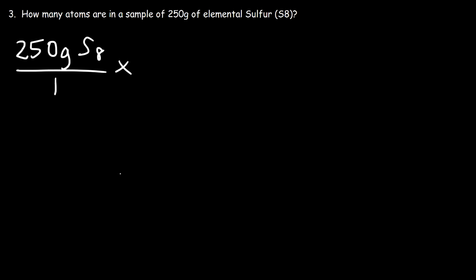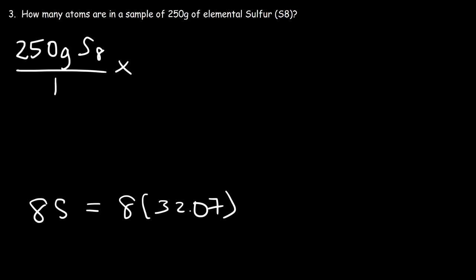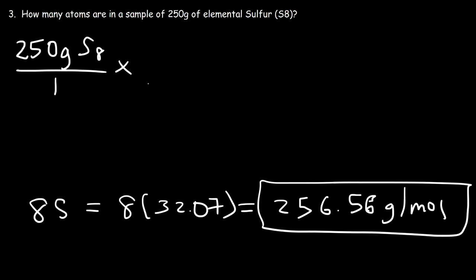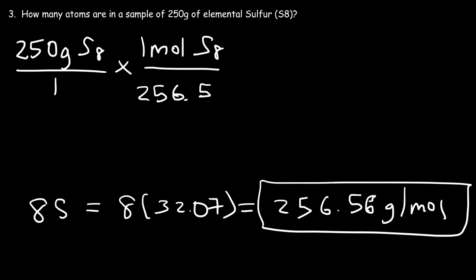We need to find the molar mass. This molecule has eight sulfur atoms, and each atom of sulfur has an atomic mass of 32.07. So eight times 32.07 is about 256.56 grams per mole. Now that we have the molar mass, let's convert grams to moles. One mole of S8 has a mass of 256.56 grams.